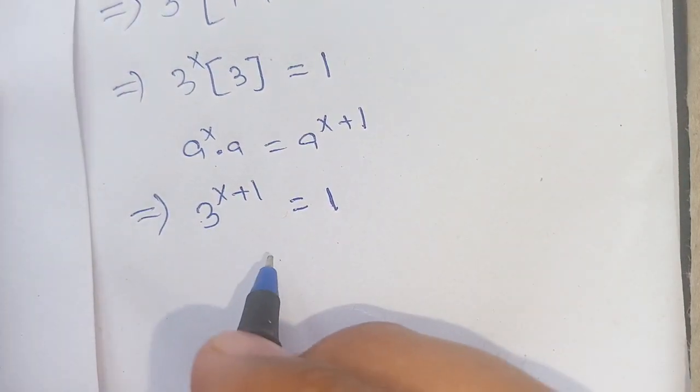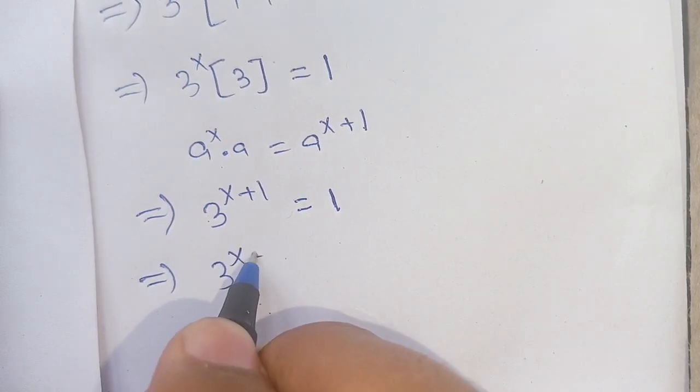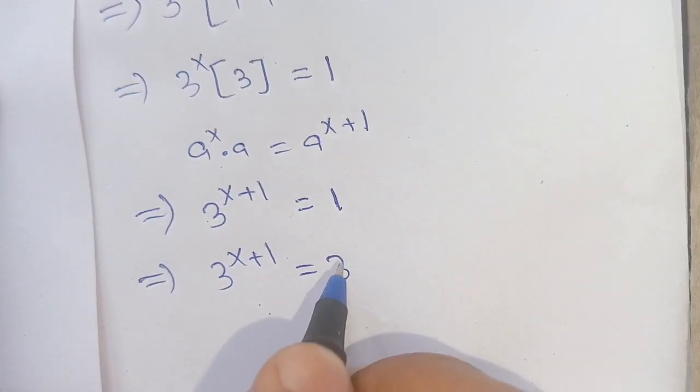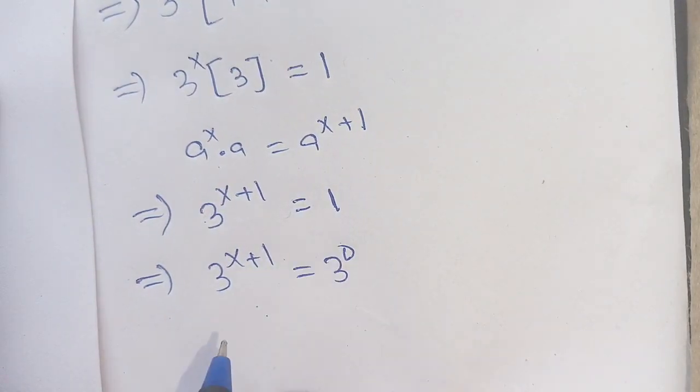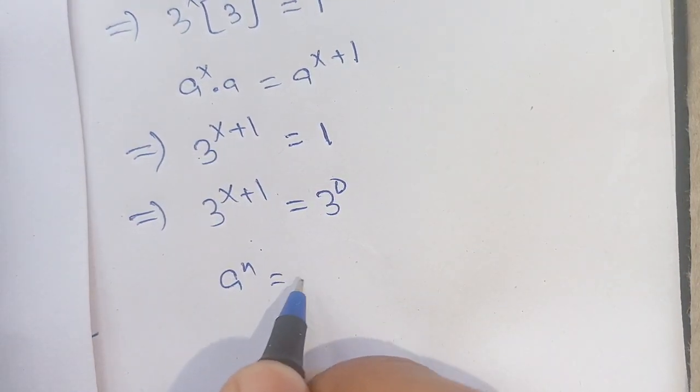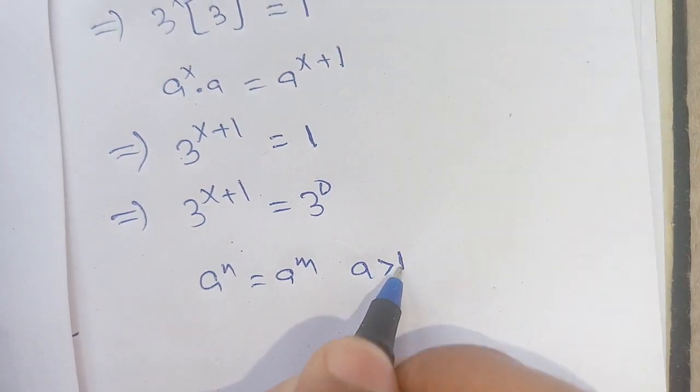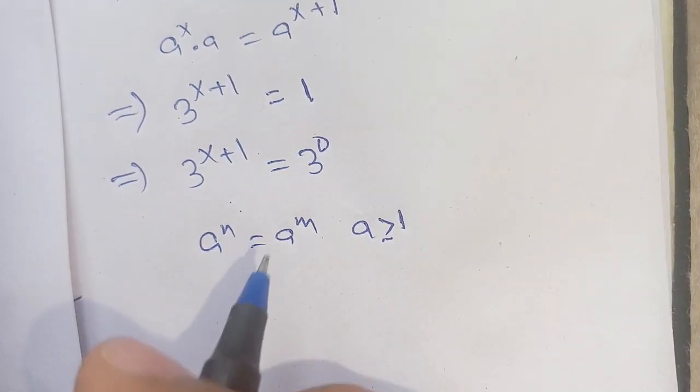Now we can write 1 as 3^0, so 3^(x+1) = 3^0. This is the form of a^n = a^m, where a is greater than or equal to 1.